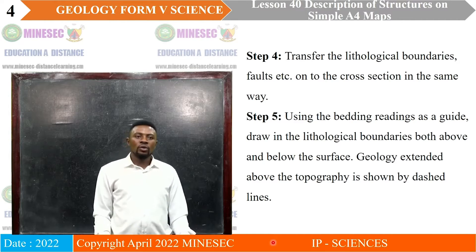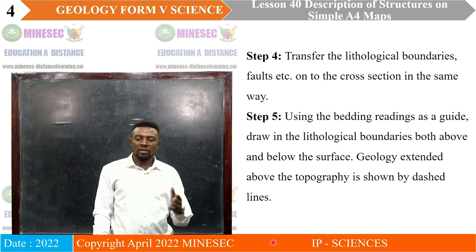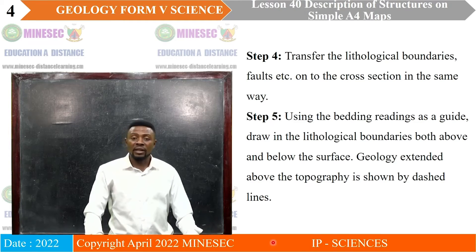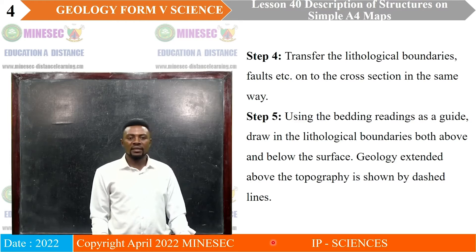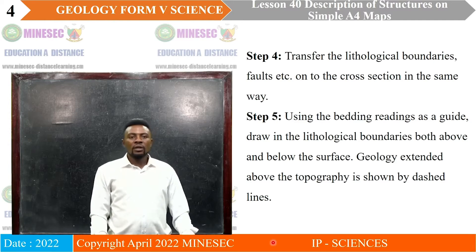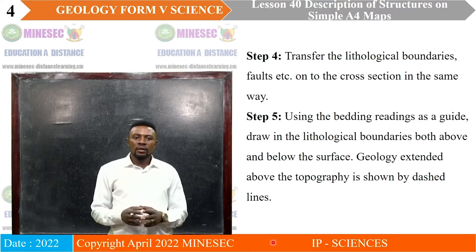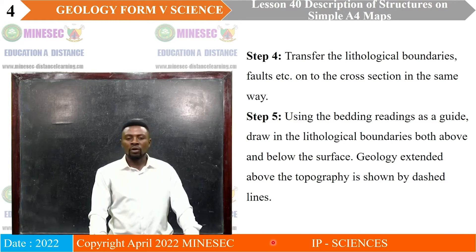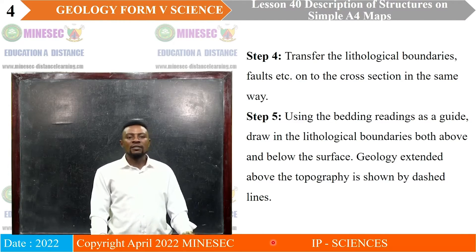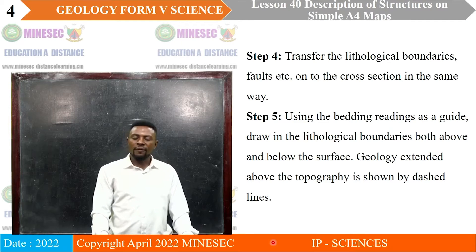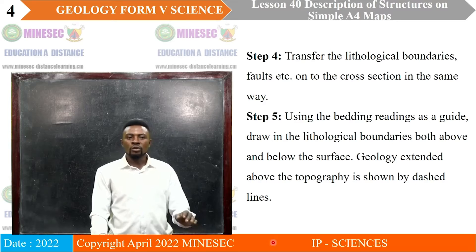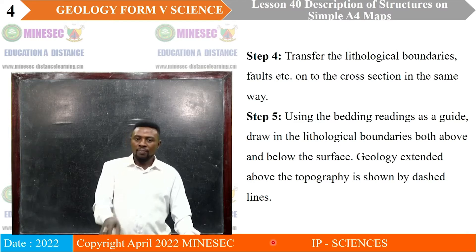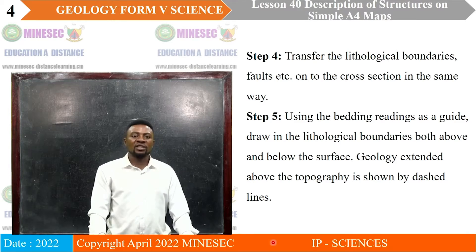From there, you also indicate if there was a fault — the same position that the fault was — and other structures like a river. All of that will be represented. The next step will be using the bedding reading as a guide to draw in the lithological boundaries, both above and below the surface. Geology extended above the topography is shown by dashed lines, so above the profile it should be indicated with dashed lines.